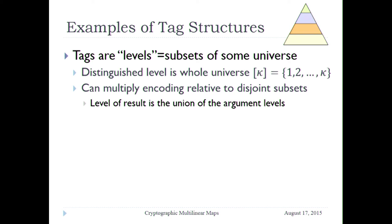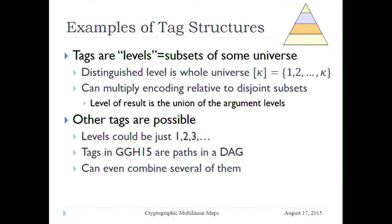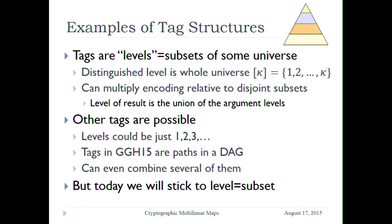Here is an example I'm going to use. Our tags are levels, and we think of levels as subsets from some universe. We have a design parameter called kappa — it's actually a set, without loss of generality the integers. Each encoding is relative to a level, which is a subset of this universe. You can add encodings relative to the same level, multiply encodings relative to disjoint levels, and when you do that, the level of the result is the union. Levels could also be paths in a directed acyclic graph — that's the GGH15 way of doing tags.